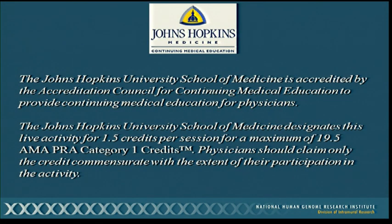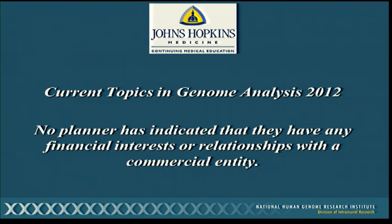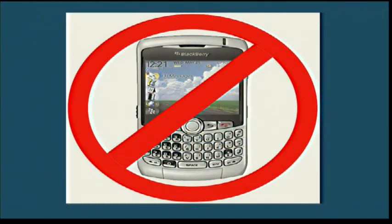With respect to continuing medical education credits, here is the accreditation statement. You can earn 1.5 credits per session for a maximum of 19.5 AMA PRA Category 1 credits for the course. Any physicians in the hall, please make sure to sign in on the sign-up sheets at the back of the hall to get your CME credits. You actually have to be in the hall to earn the credits — you can't earn them by watching the videos online. By way of disclosure, none of the three of us as planners have any financial interests or relationships with a commercial entity relevant to the course. If you're carrying a mobile phone, BlackBerry, or pager, please take a moment to put them on silent, as a courtesy to the speakers.